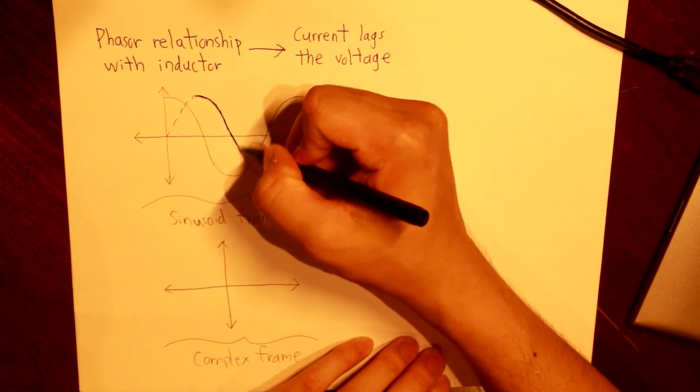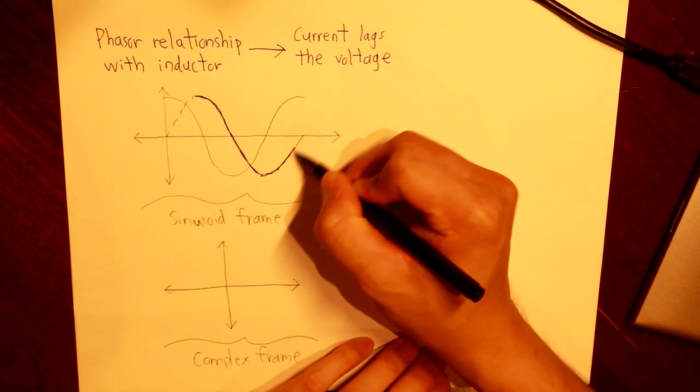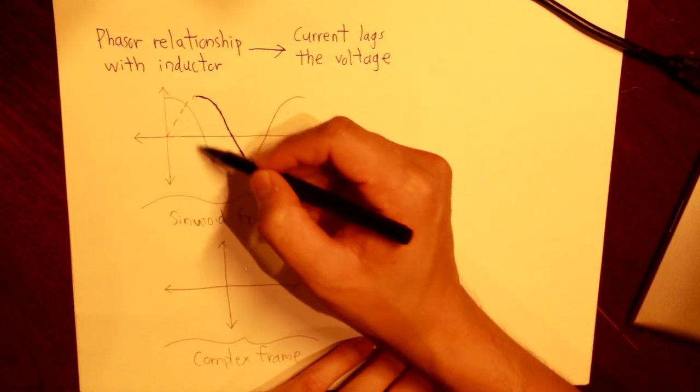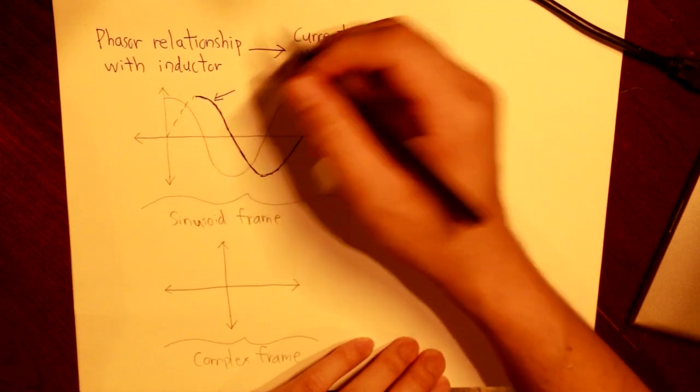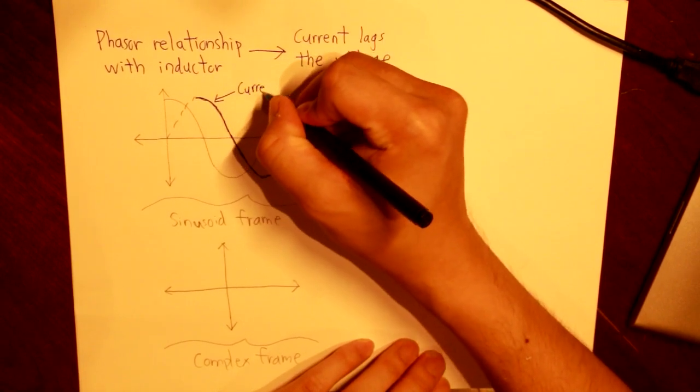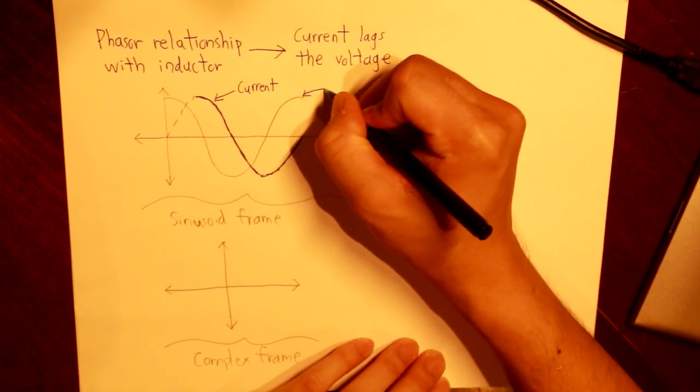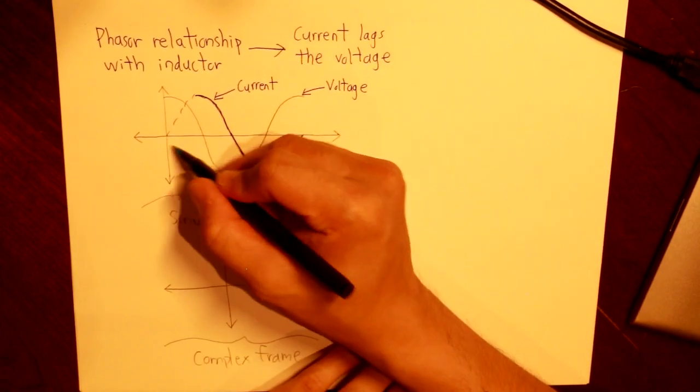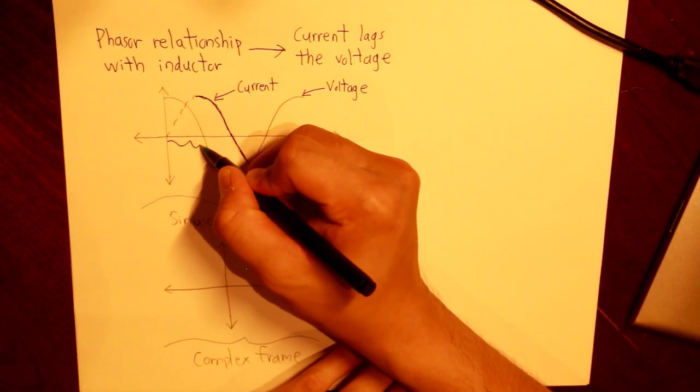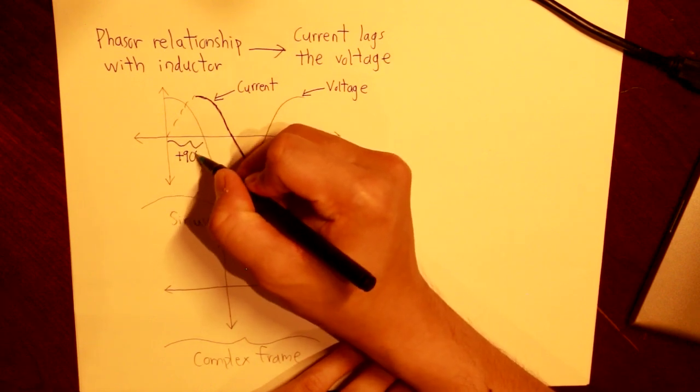So this is the current wave. And this here that is leading is the voltage. So we'll highlight that, current, and then voltage. And the phase difference will be positive 90 degrees.